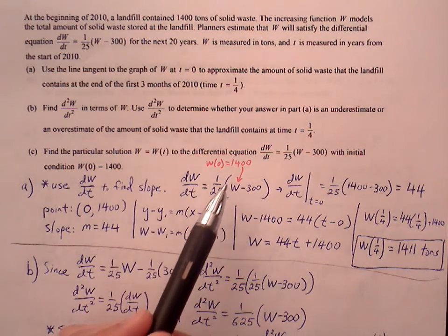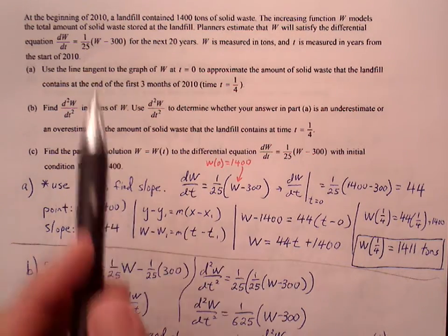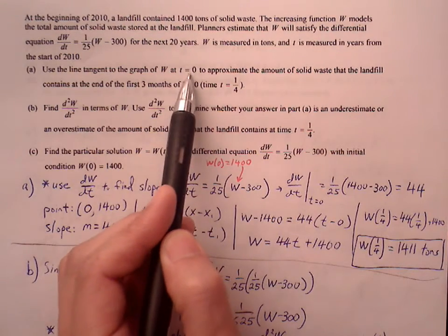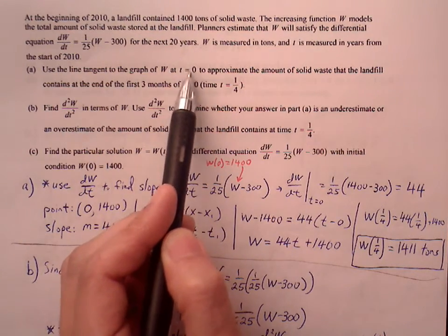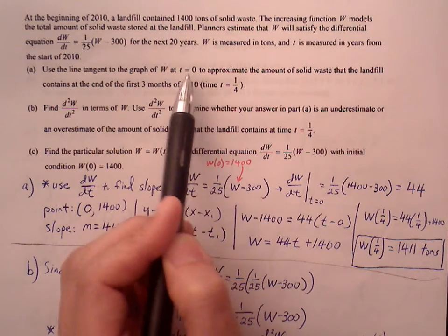So at t equals one fourth... sorry, at t equals zero. We're going to find the equation line at t equals zero and then use the tangent line equation to figure out our approximation three months in. So at t equals zero, our ordered pair is going to be (0, 1400).